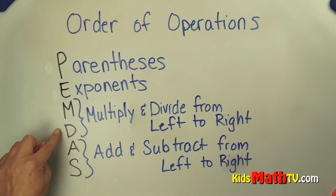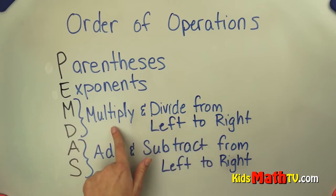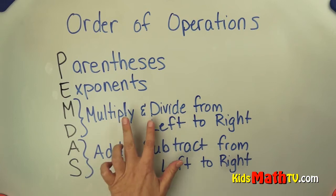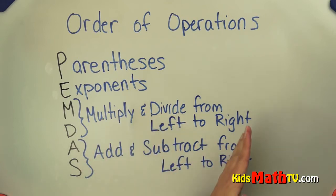Then we multiply and we divide from left to right. It can be divide and multiply from left to right. It doesn't matter which is first. We do the multiplication and the division in order from left to right.